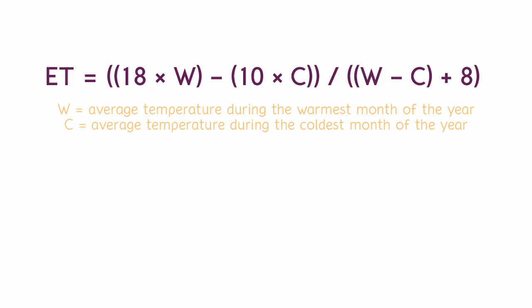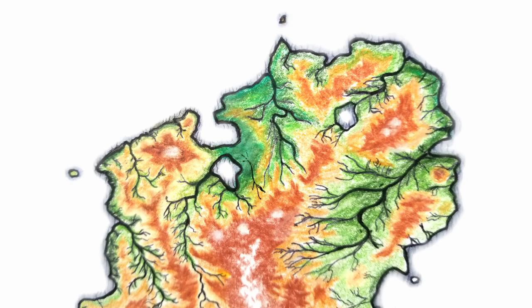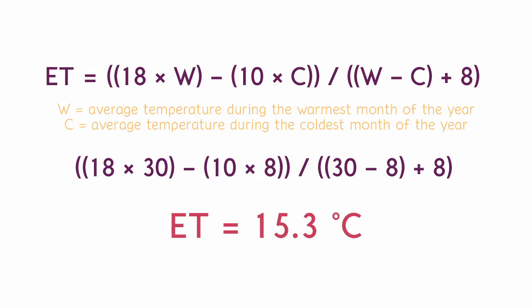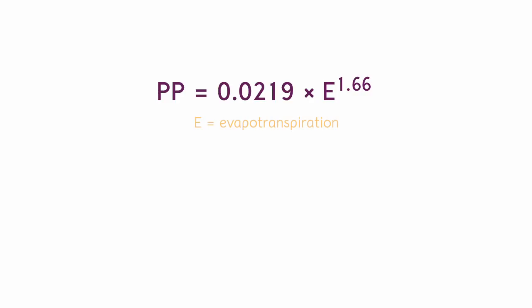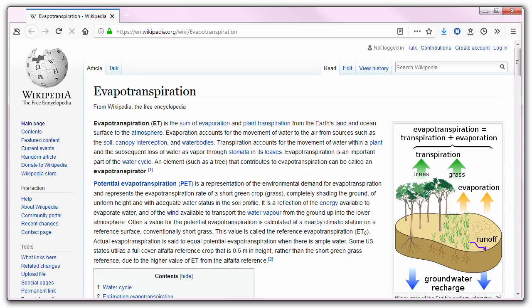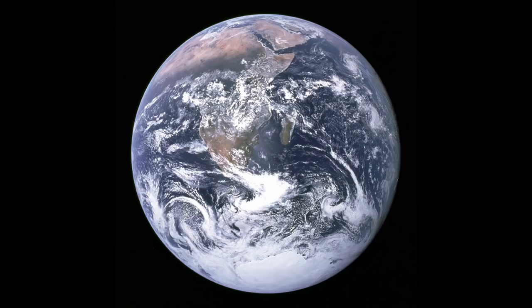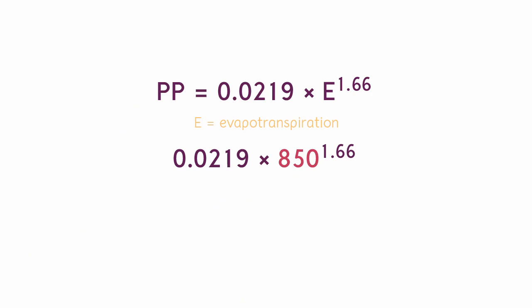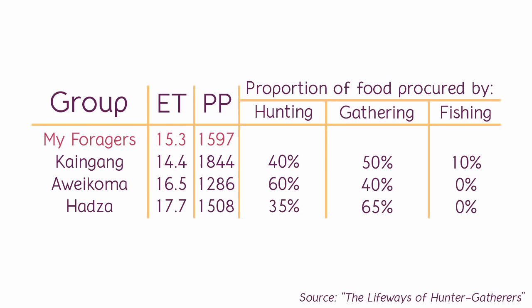Here is the equation for calculating the effective temperature. I have plugged in the numbers for the area I'm working with, and here is my ET. This is the equation for calculating the primary production of an area — E stands for evapotranspiration, and calculating it is a complex matter. But for my river basin, there's a very good real-world analogy: the Sichuan basin. So I have plugged in the data from Sichuan into the calculation, and here is the result. The numbers I got put me closest to these forager groups.